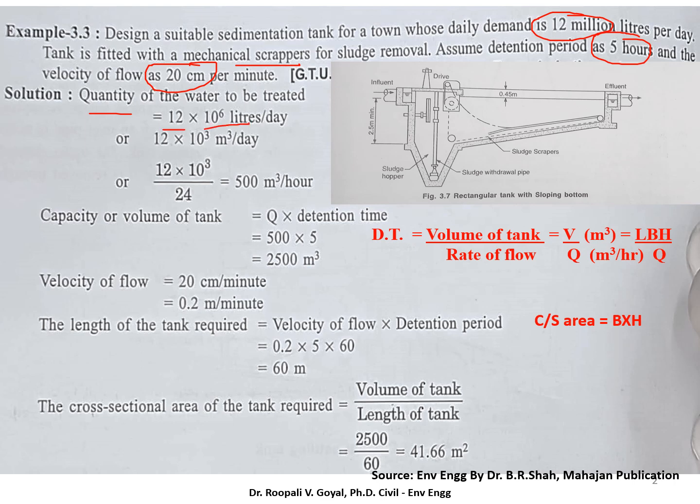First we have to convert the unit to meter cube per hour, because our detention time is normally in hours. So as you know that detention time is given by volume upon rate of flow. So here we know rate of flow and detention time, so we get the volume of tank.